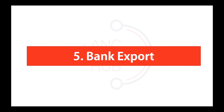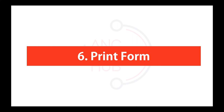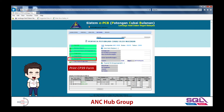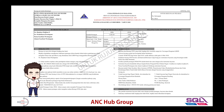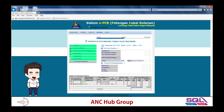Number five and six are extras you may not need once you're experienced. Number five exports a bank TXT file for paying through the bank. Number six prints a form for your own records. Number seven is for amendments — if you've submitted but haven't paid and realize you made a mistake, go to number seven, change the status, resubmit, and make payment.